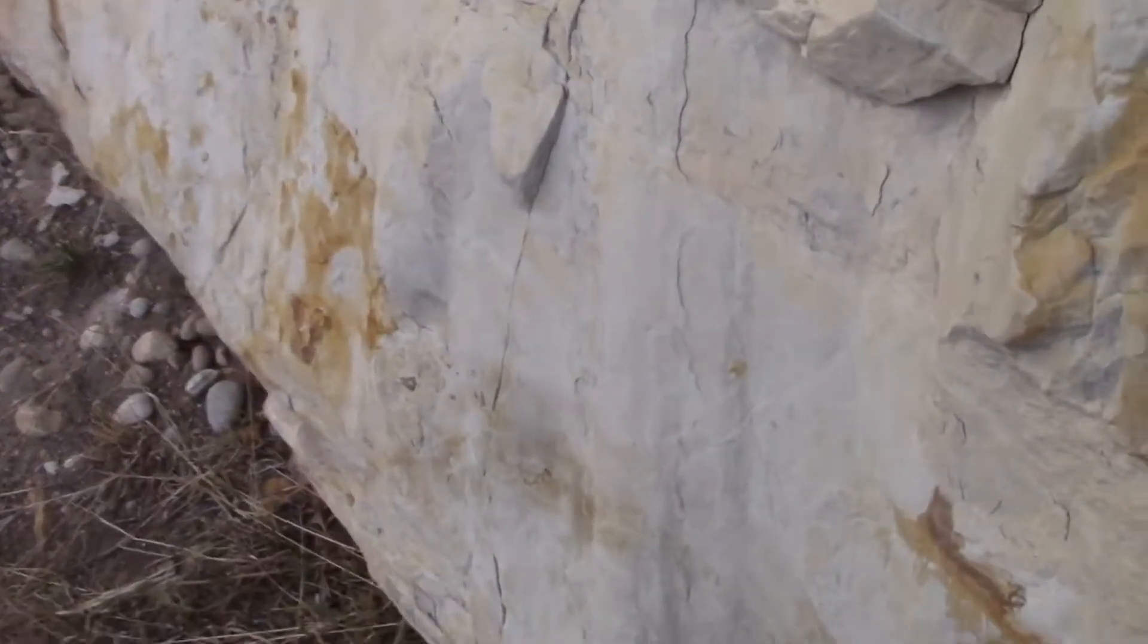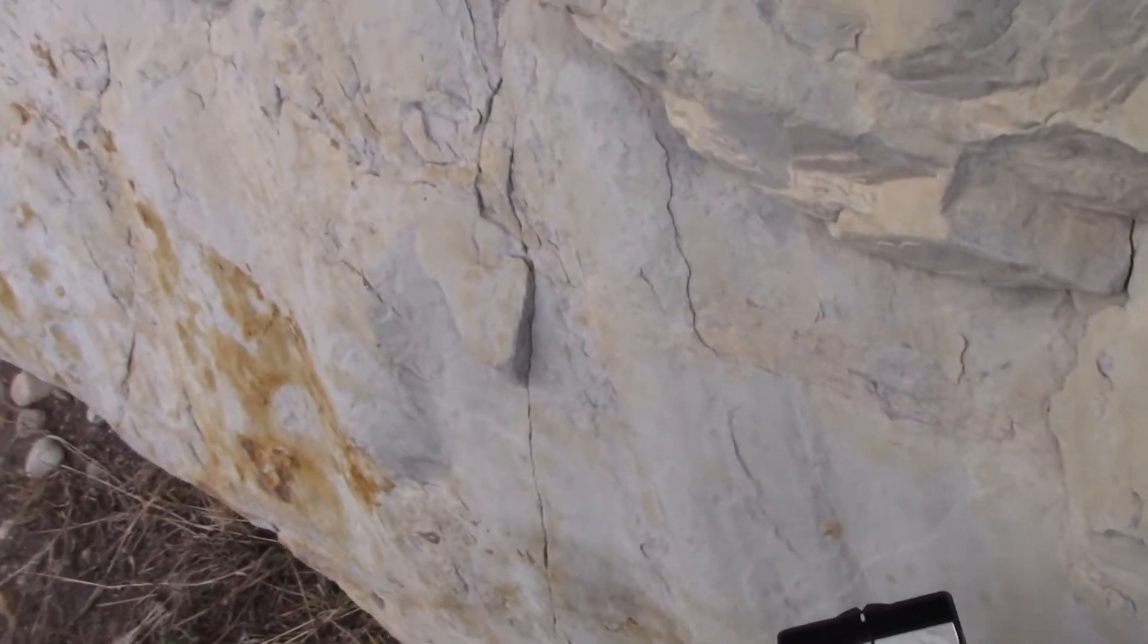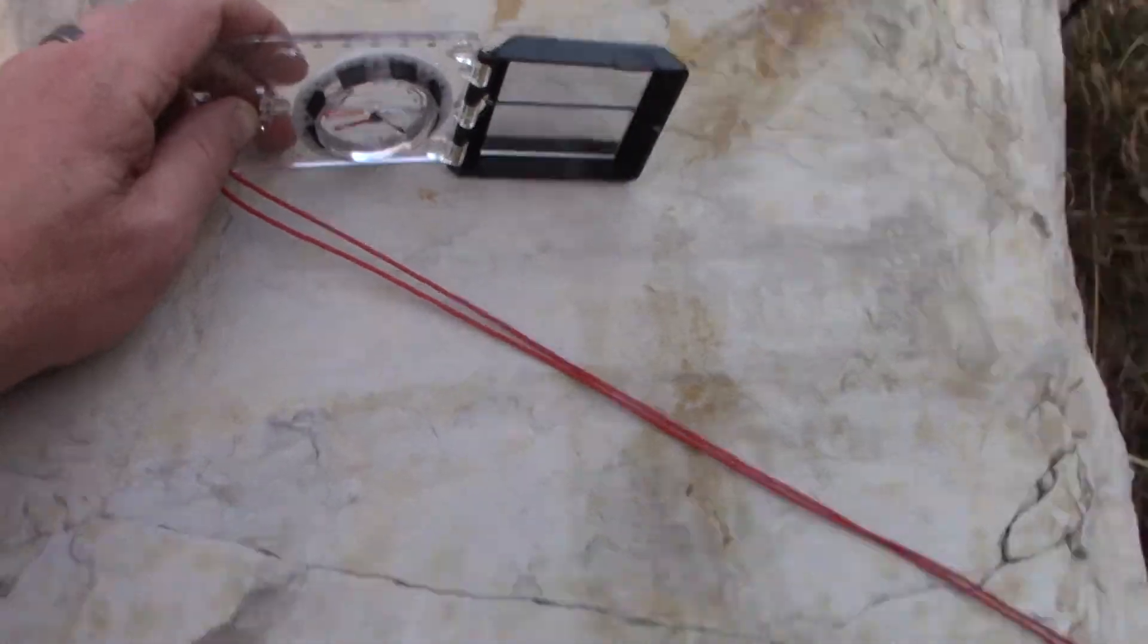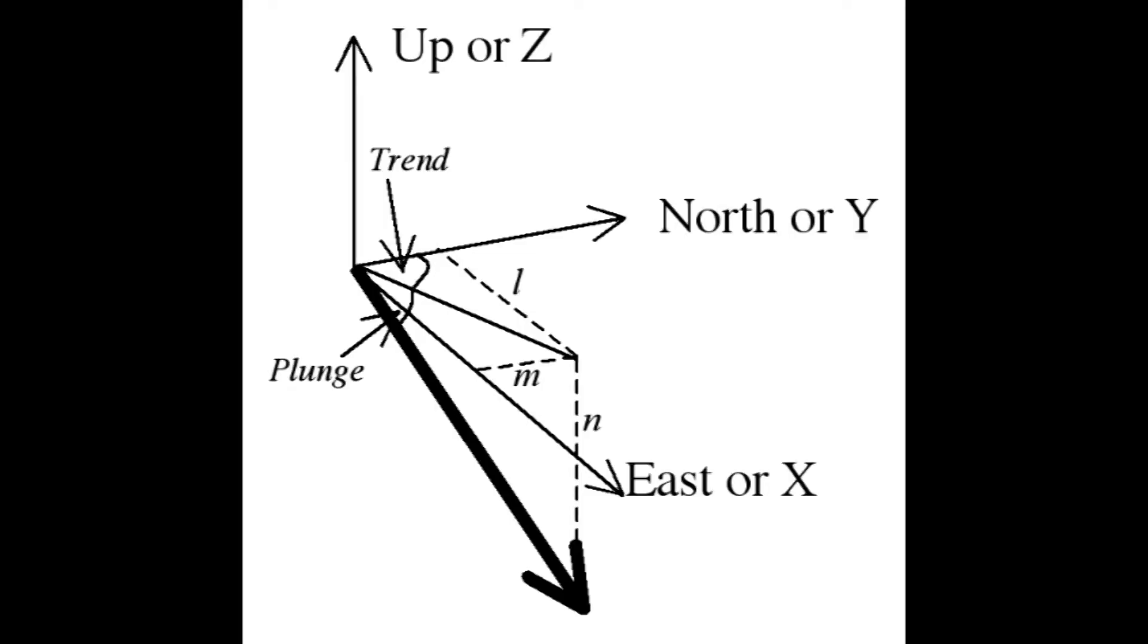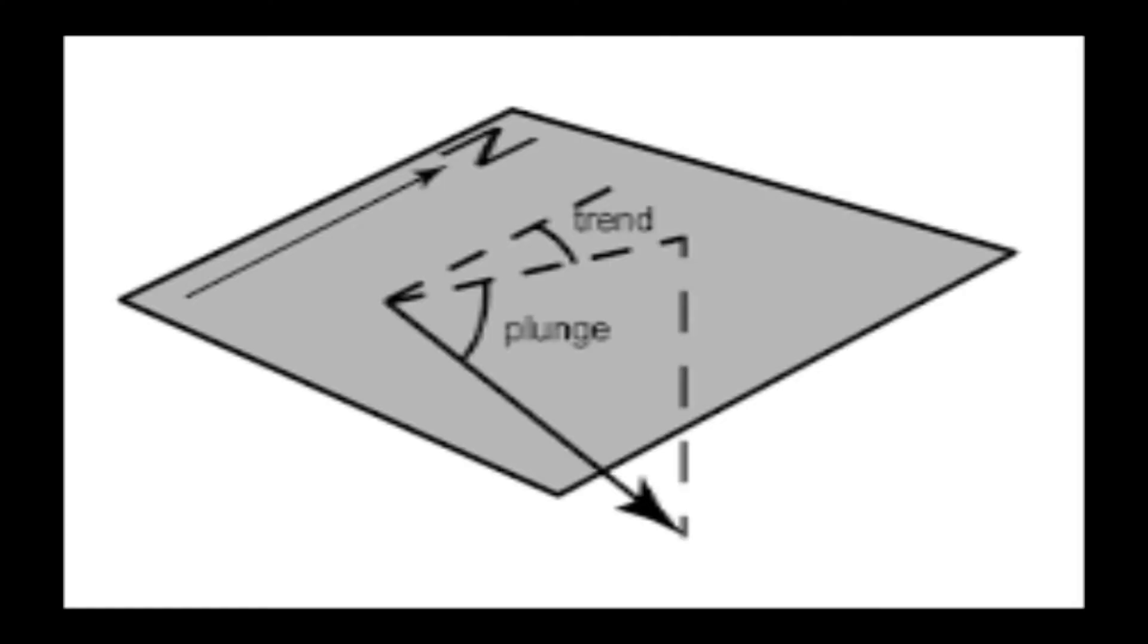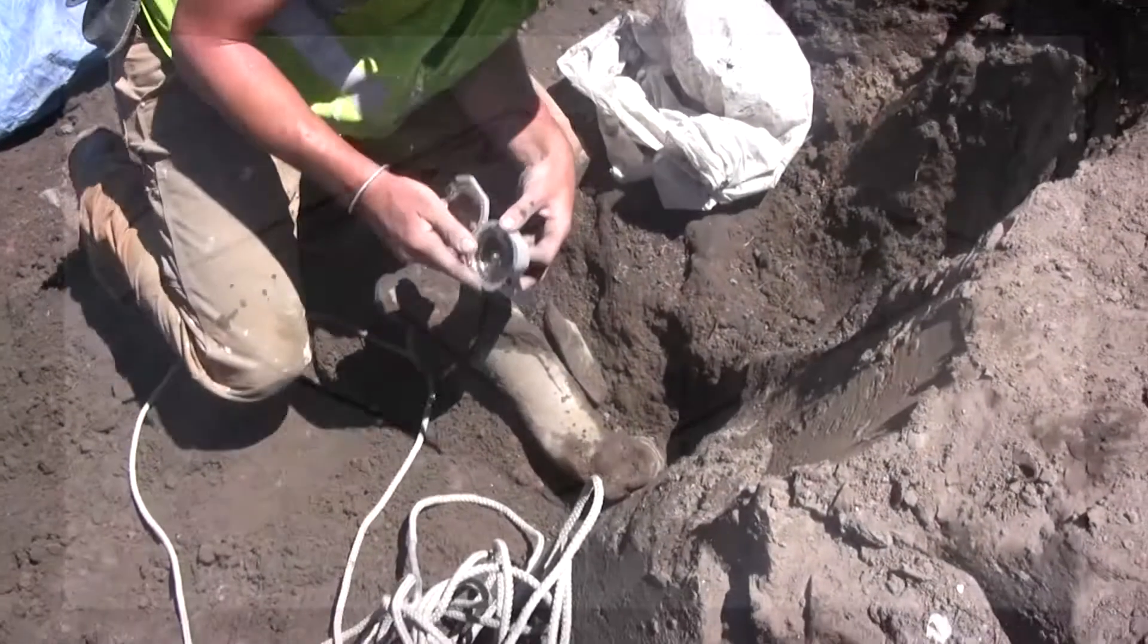So we have seen that recording linear data is done by noting the angle from horizontal at which it is dipping, and the direction in which the linear feature is plunging. In other words, the plunge angle and azimuth, dip direction, or plunge and trend. These are all saying the same thing.